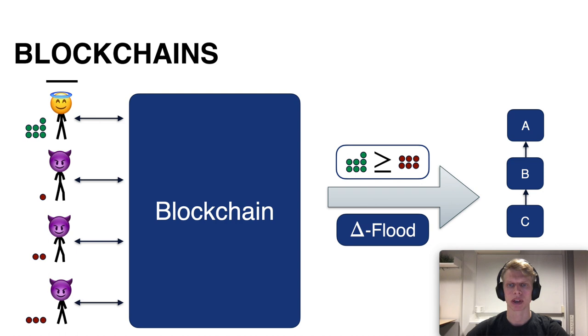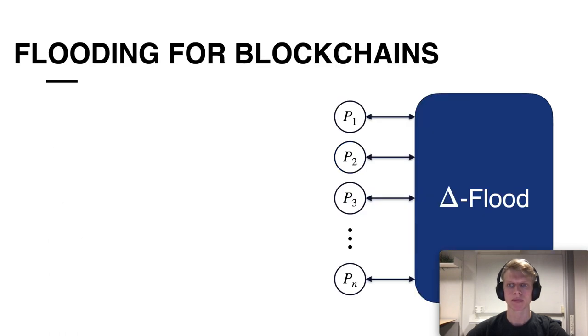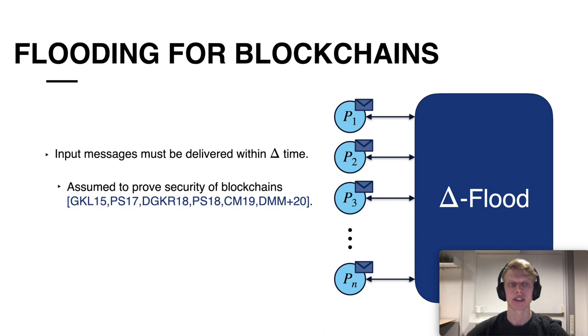So let's have a closer look at this flooding network assumption. A flooding network is a very simple protocol where any party is allowed to input a message and as a consequence all other parties will receive this message within some delta time. And this is the assumption that is used in order to prove security of blockchains in a wide range of work.